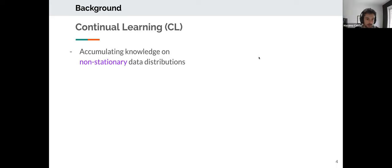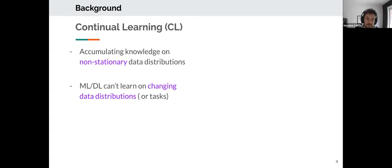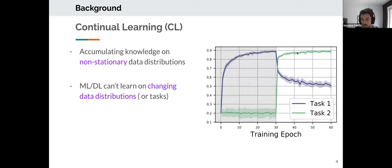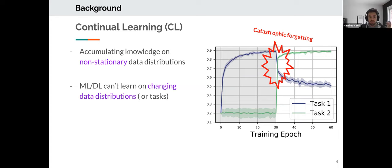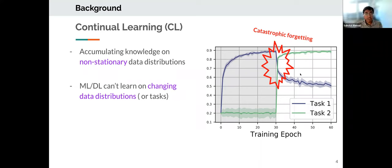Continual learning is about accumulating knowledge on non-stationary data distributions. Sadly, deep learning methods tend to forget when trained on non-stationary distributions. We call the big drop in performance when the task or data distribution changes 'catastrophic forgetting.' Even though my motivation is learning new tasks faster, the field mostly studies the phenomenon of catastrophic forgetting and tries to solve it.